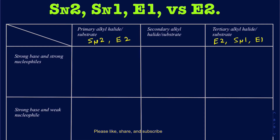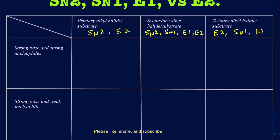Secondaries can have an SN2, an SN1, an E1, and an E2. So the question is when a particular alkyl halide will be doing SN1, SN2, E1, or E2. Let's focus on the types of nucleophiles or strong bases that you're going to have in those categories.